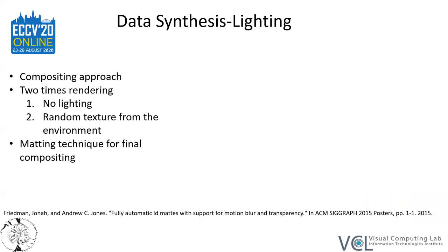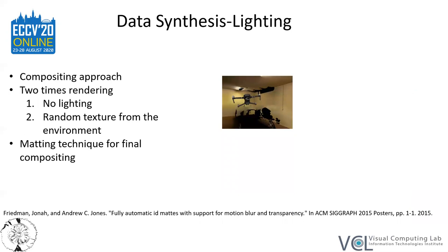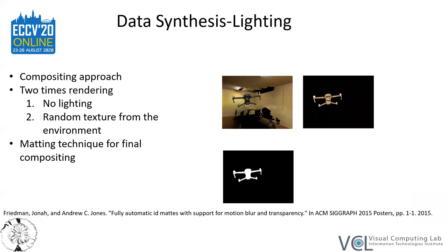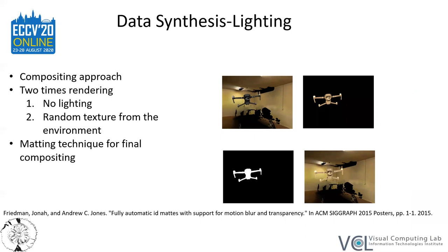For achieving realistic lighting of the UAV, we followed a compositing technique in which the scene was rendered twice: once with no lighting, preserving the emission of the already lit environment, and then a follow-up render which only rendered the drone with random lighting. Finally, we employed an advanced matting technique to perform high-quality compositing of the lit drone onto the unlit render, with almost no artifacts, using the drone's only-rendered mask.